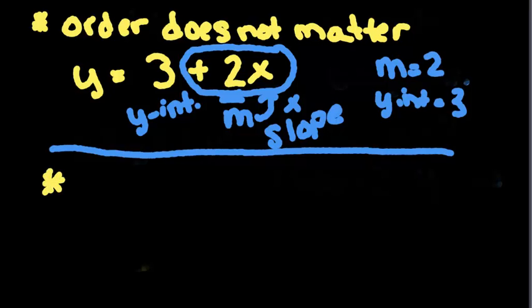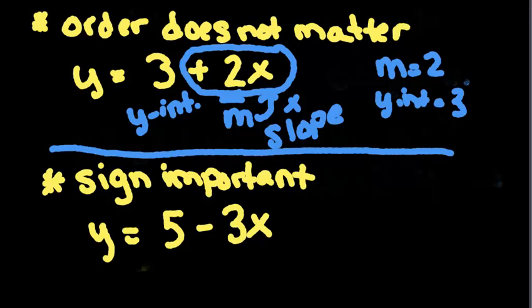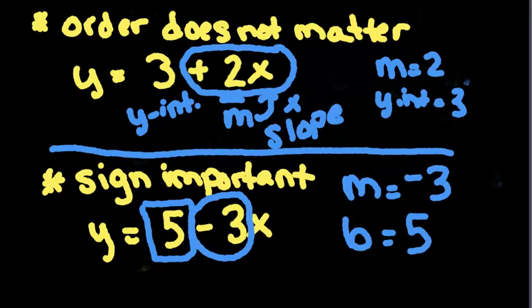The second thing to pay attention to is that the sign is important. So if you have y equals 5 minus 3x, then the slope, when you look at the slope, it's the one with the x, so this one is going to be it. I am going to circle the number and make sure I include that sign. You can see the sign in front of the 3 is a negative, which means that my slope is not just the 3. It has to include that negative. So my slope is a negative 3, and my y-intercept is a positive 5. So the sign is important to keep in mind as well.